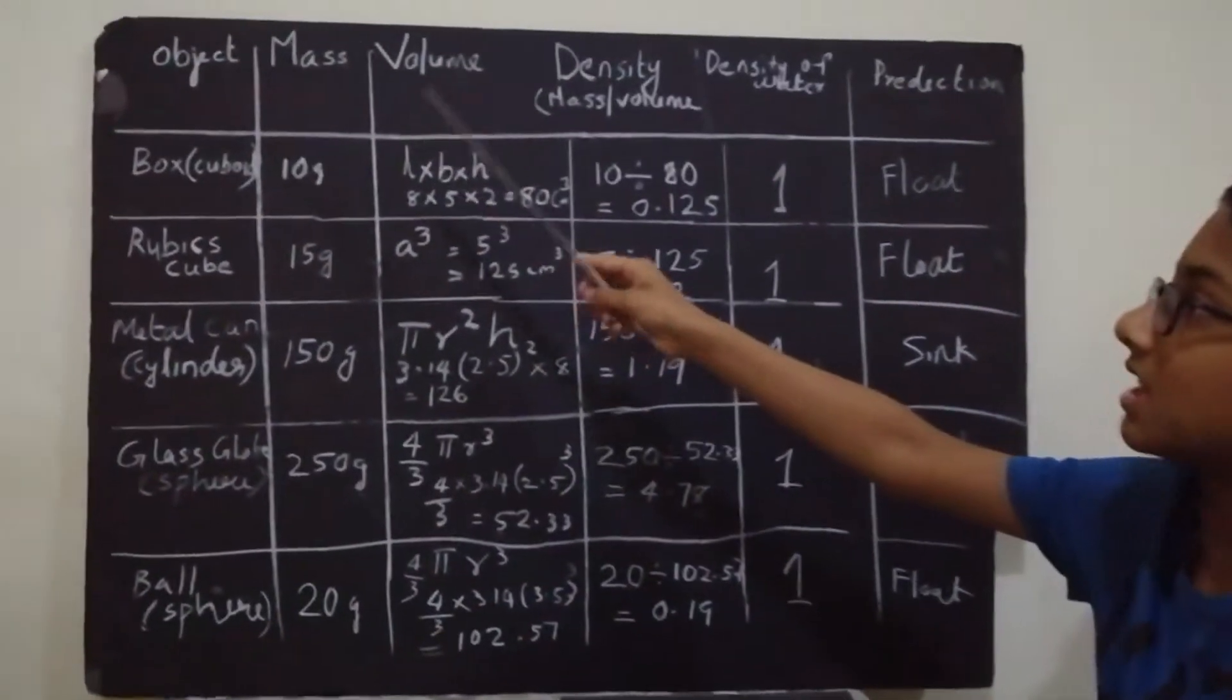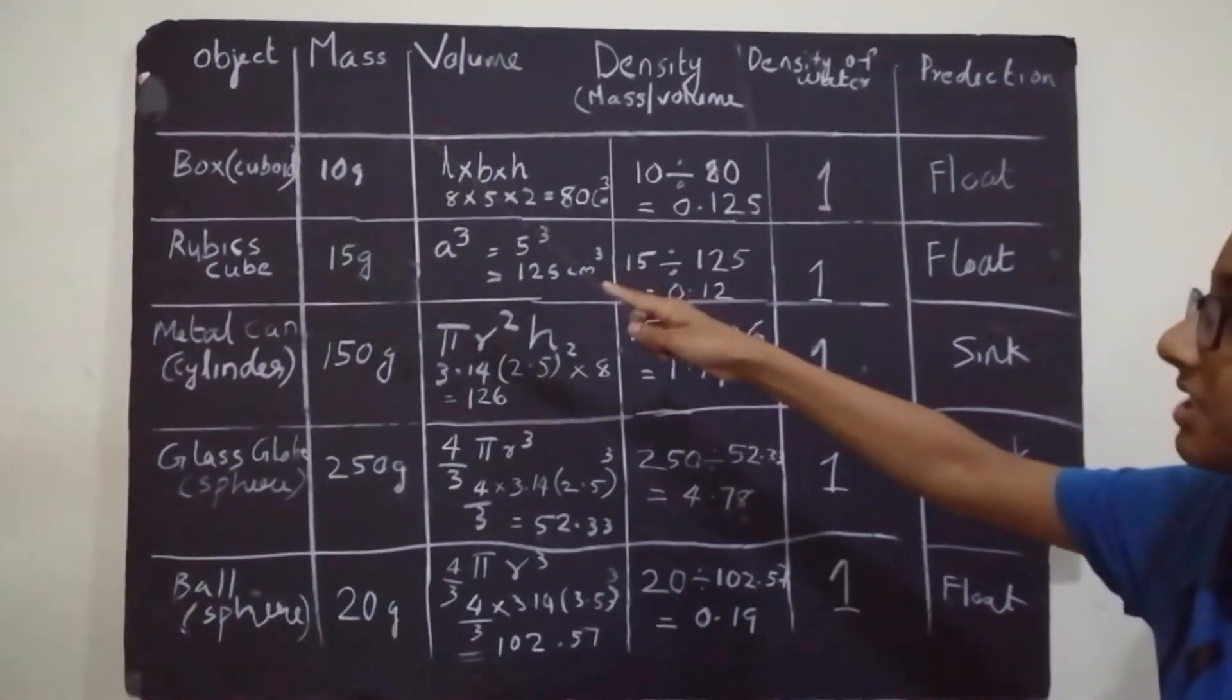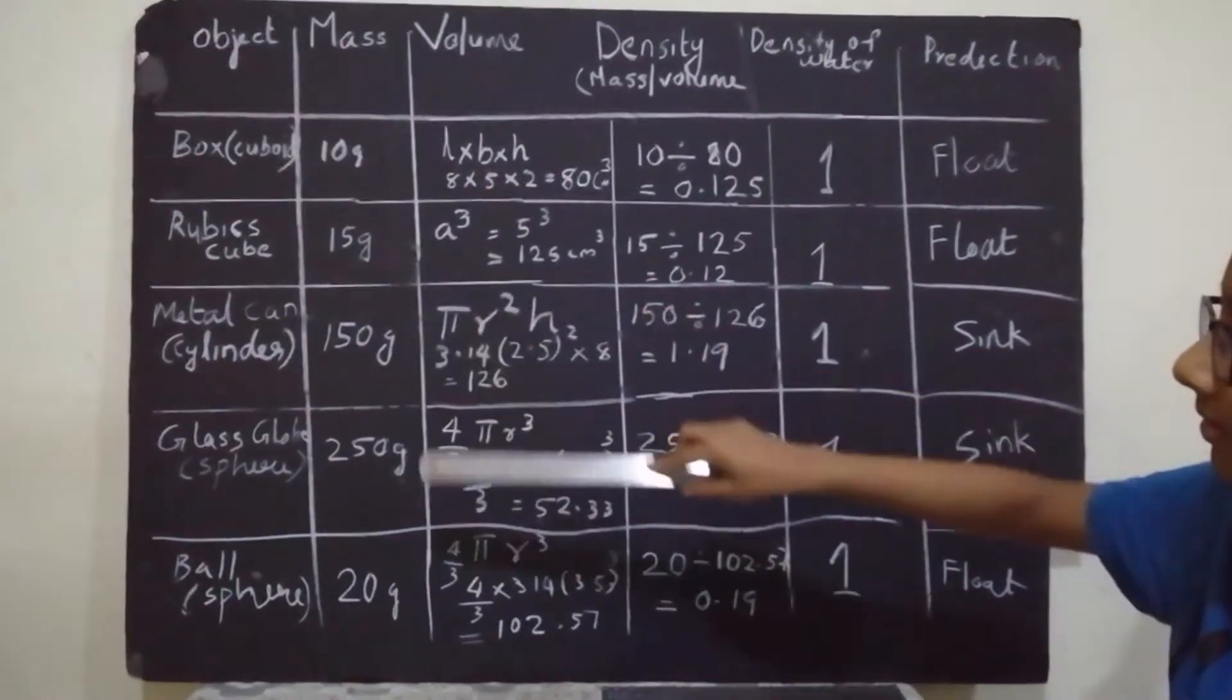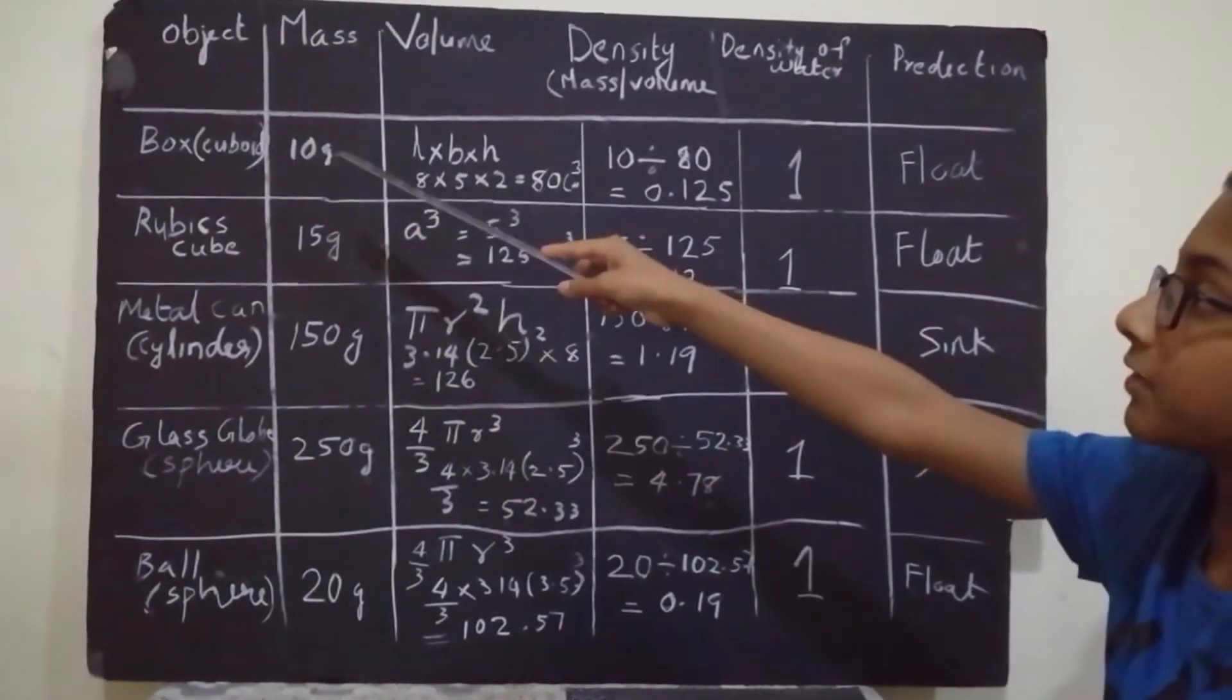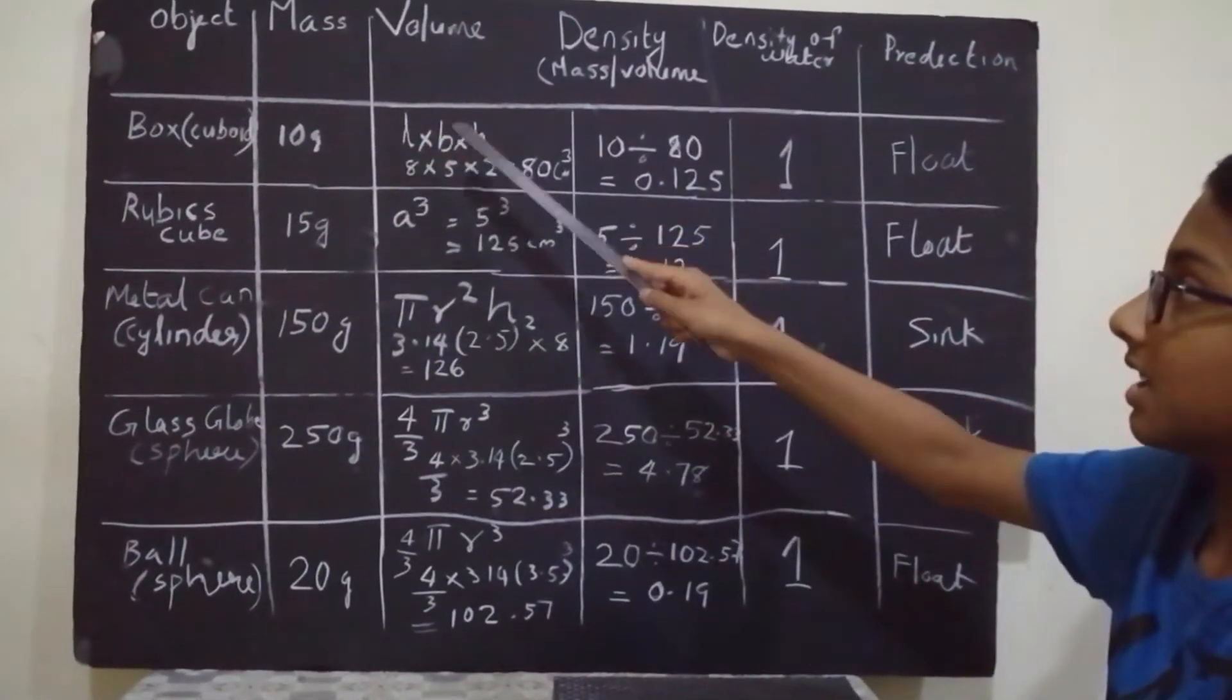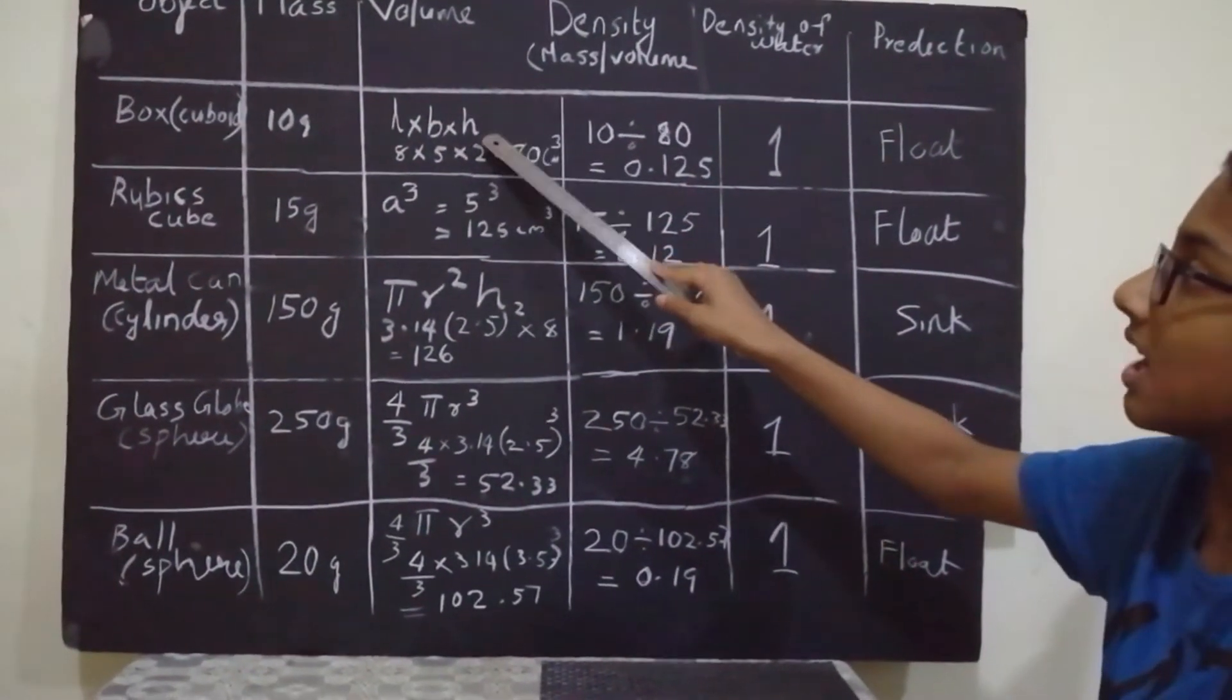Here, we have written the mass of each object. Then, the volume of each object. The volume of the box, also the cuboid, is L into B into H. L means length, B means breadth also called width, H means height.